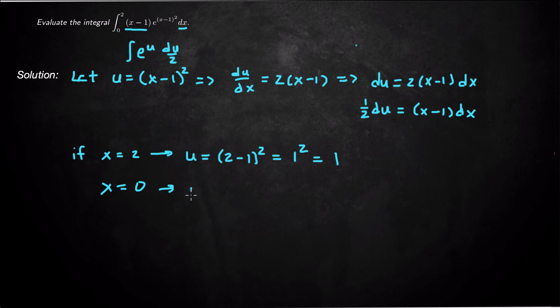If x equals 0, the lower bound, my new lower bound for u will be (0-1)² = (-1)² = 1. So my integral becomes ∫₁¹ e^u · ½du.